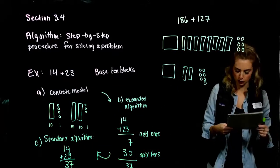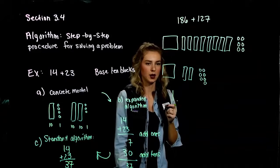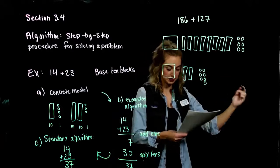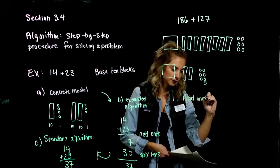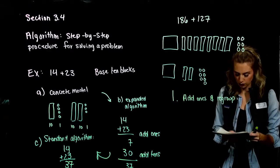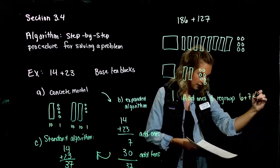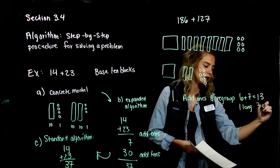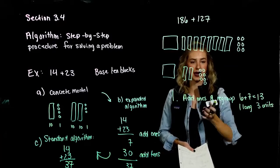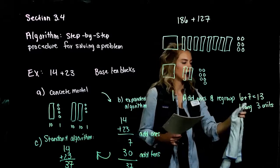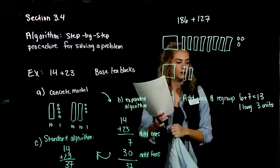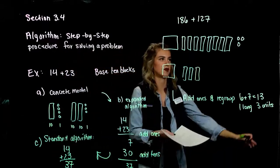We always start from the smallest and combine our units first. Can we make a long out of just our units? Yes. So the first step: add the ones and regroup. If we can collect enough ones to make a long, we really want to. So 6 and 7 gives us 13, which is 1 long and 3 units. We take out 10 of the units and trade them for a long, keeping 3 units.